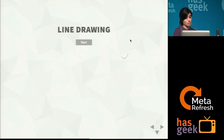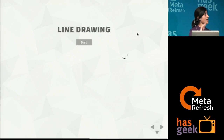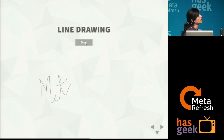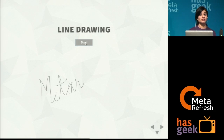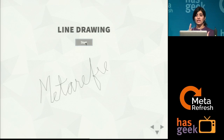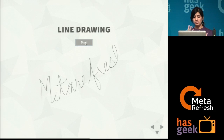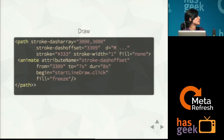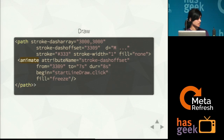One more thing you can do is have SVG draw something. With SVG path capabilities, you can animate and make your website much richer. To do this, it's really simple — you just have your path and use the animate tag to animate it.